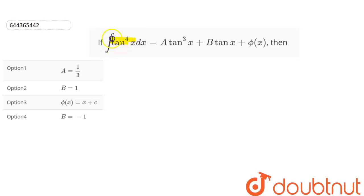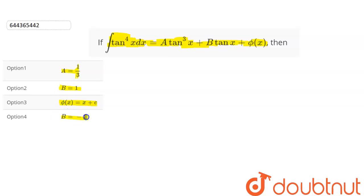The question is: if the integration of tan x to the power 4 dx is equal to a tan cube x plus b tan x plus phi(x), then we have the options: a is equal to 1 by 3, b is equal to 1, phi(x) is equal to x plus c, or b is equal to minus 1. So we have to find the value of a, b and phi(x).